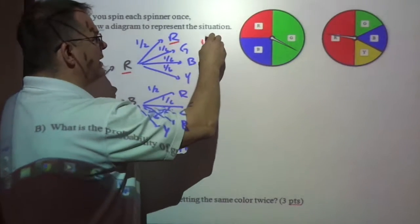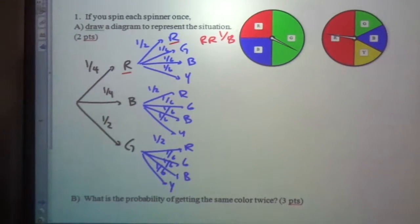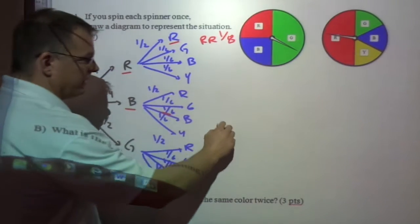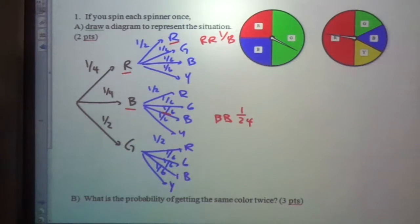We could get red, red, and that probability is one-eighth. Or we could go blue and then blue, so that would be blue, blue, multiply those, would be one-twenty-fourth. One-sixth times one-fourth.